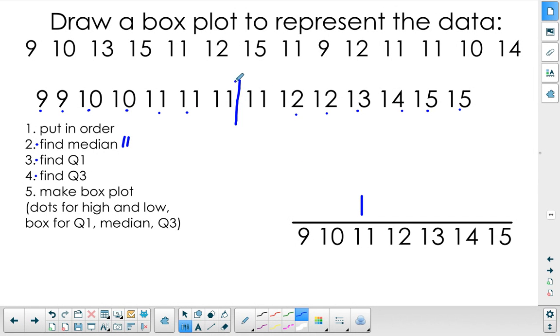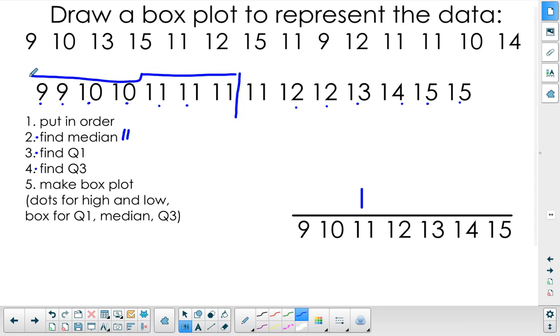Now I use everything on this side of the line to find quartile 1. So 9 matches 11, match each one, and I'm left with 10 as quartile 1. I'm just going to mark that here.